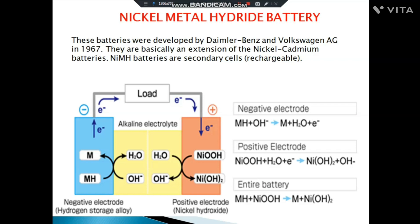Nickel metal hydride (NiMH) is an extension of the nickel-cadmium battery and is also a rechargeable secondary battery. MH stands for metal hydride. At the anode, MH reacts with OH⁻ from the electrolyte to produce metal, water, and electrons. These electrons then flow to the cathode.